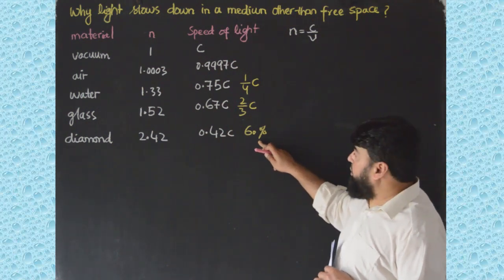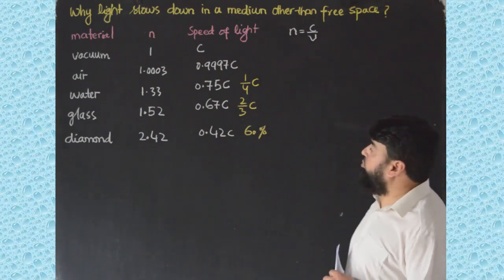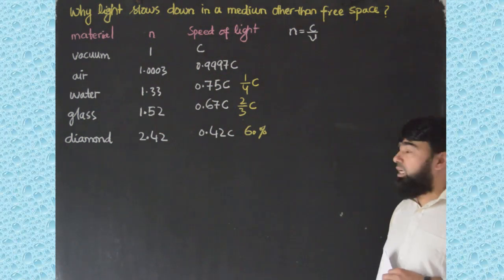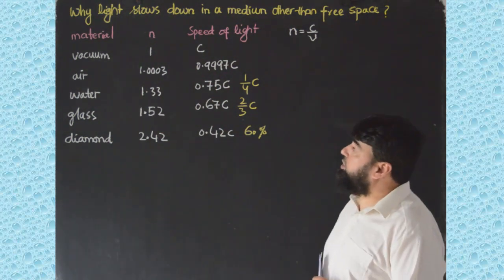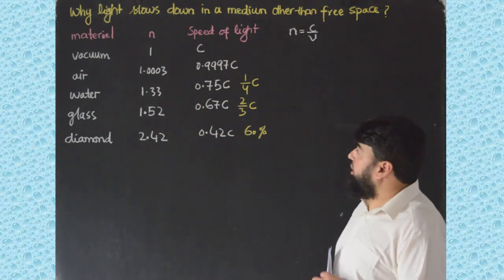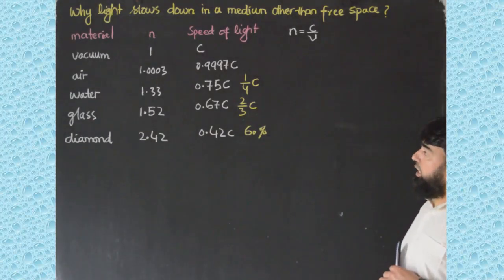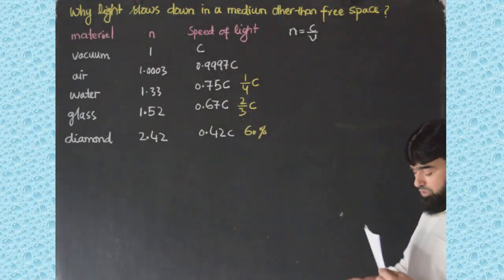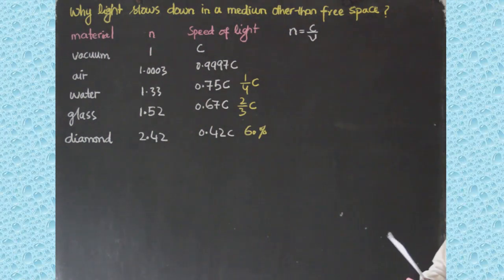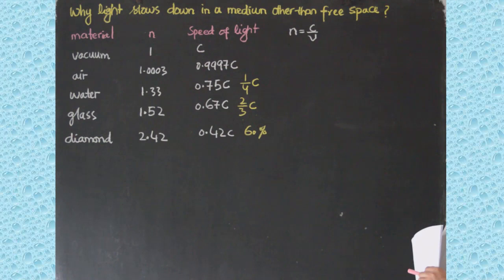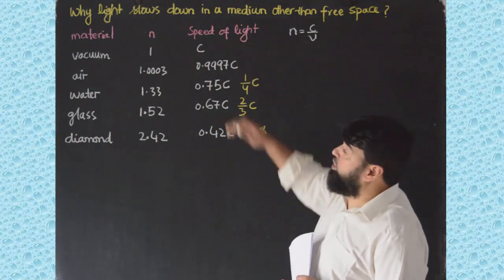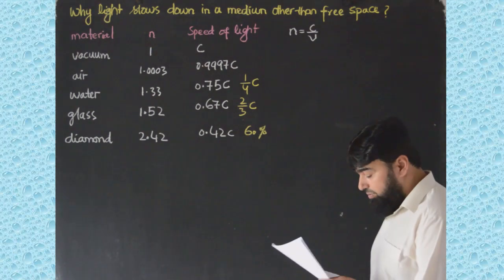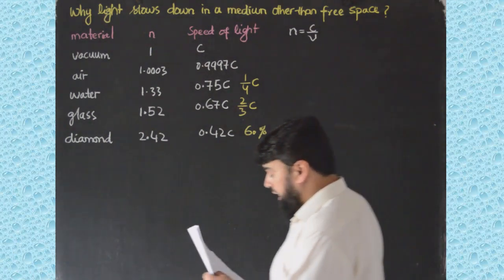In diamond the speed has been almost 60% reduced, and light travels at only 40% of c. Now, why does this speed reduce when light moves in media other than free space? To understand this, we need to consider the wave nature of light.